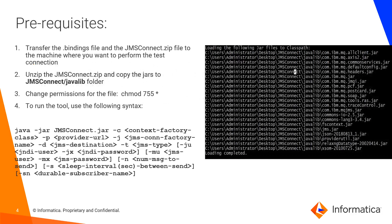These are the prerequisites. First, you need to get the .bindings file from the MQ server or from your JMS admin. You need to download the JMSConnect.zip file which contains the utility, unzip it and copy it to the machine where you want to test it. Also, you need to place all the JARs you see in the screenshot to the JMSConnect java lib folder. Once you have placed all the JARs, you need to provide permission to the JMSConnect utility to run. Below is the command or the syntax to run the utility. I will show all these steps in the demo.